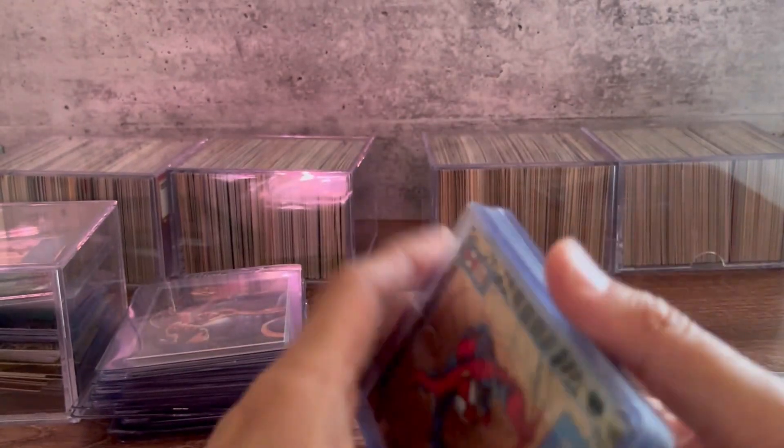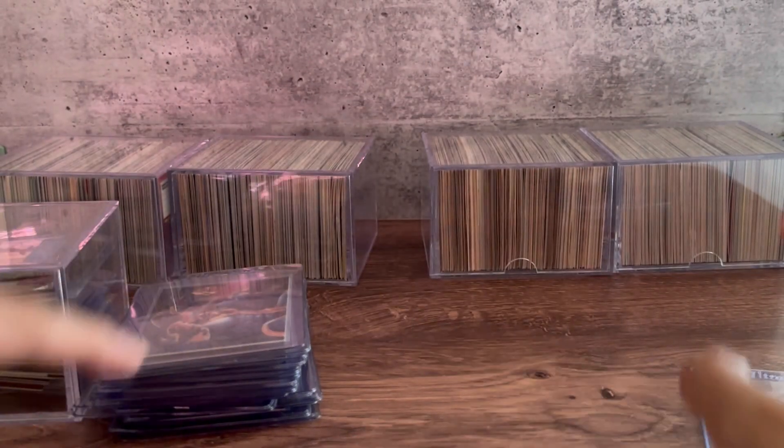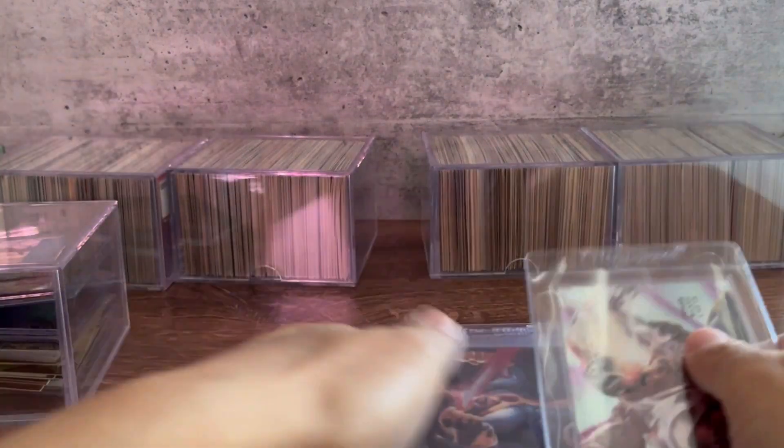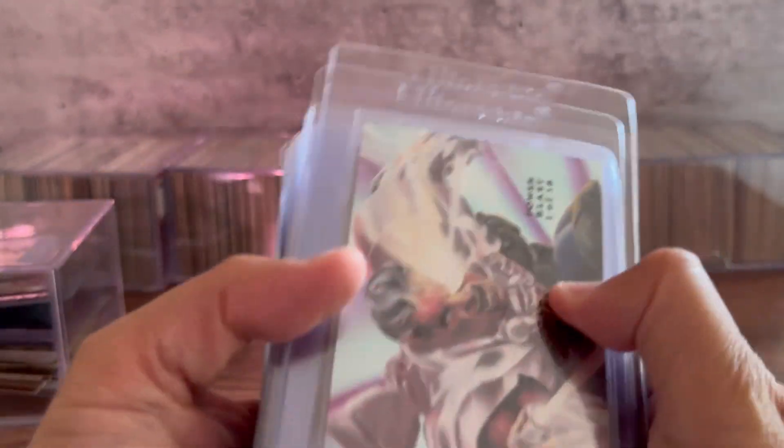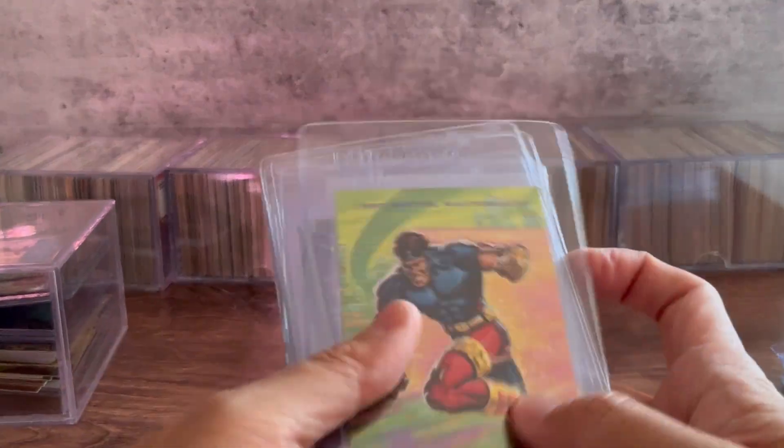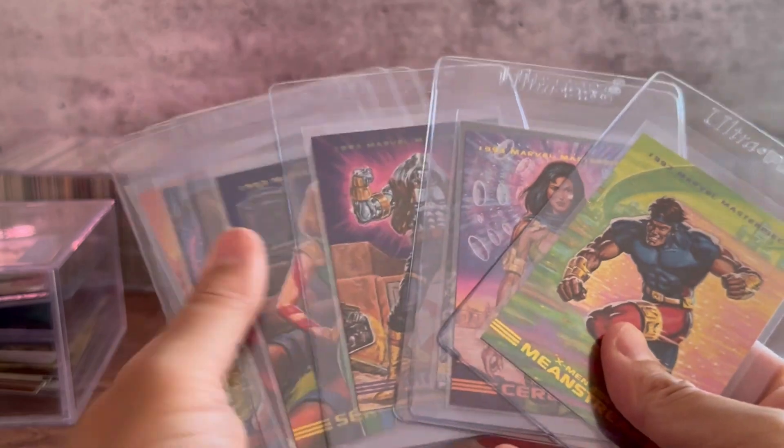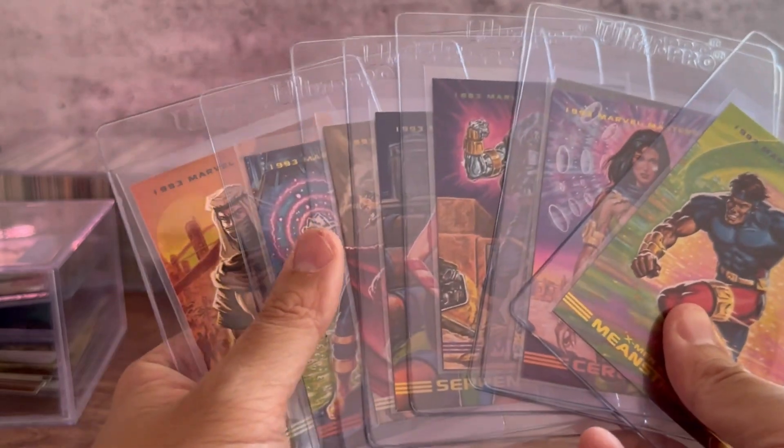That one goes for a good amount of change. Then more of these kind of types of cards. This one is an 18 card set and I have all 18 in here. Then we have another set here, this is Marvel 2099. I don't know these characters but I have that set as well.